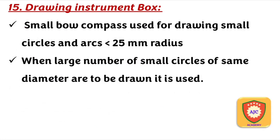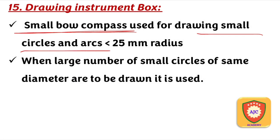This is the small bow compass. It is used to draw small circles and small arcs. It is useful when you need to draw multiple arcs of approximately the same radius, around 25 mm.